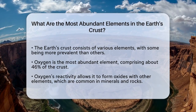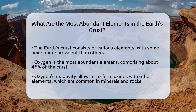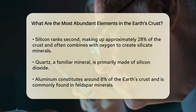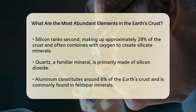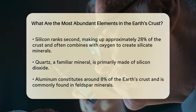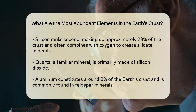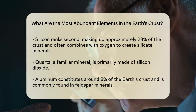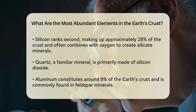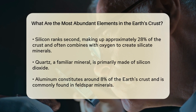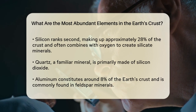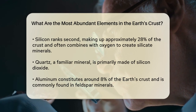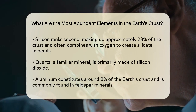Right behind oxygen is silicon, which accounts for approximately 28% of the Earth's crust. Silicon often links up with oxygen to form silicate minerals, which are the most common minerals on Earth. You might be familiar with one of these minerals — quartz — which is essentially silicon dioxide.